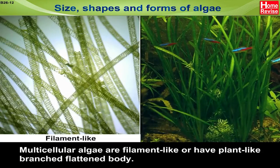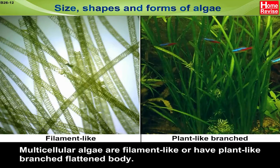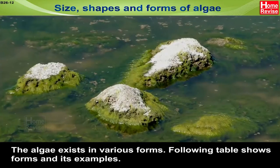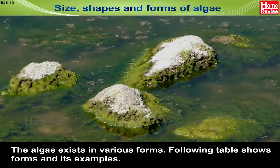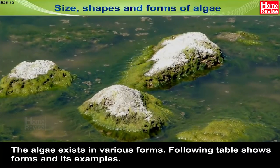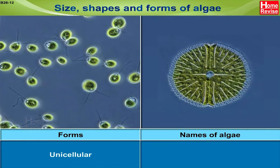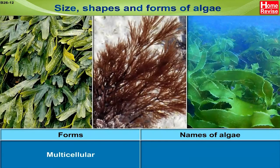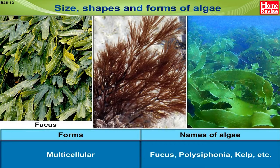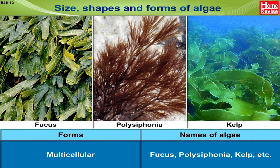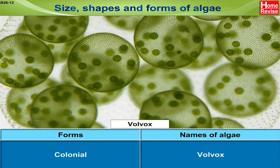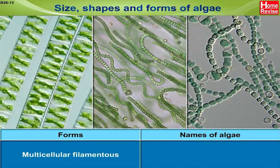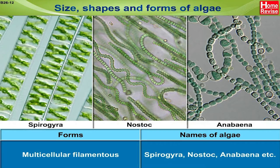Multicellular algae are filament-like or have plant-like branched flattened body. The algae exist in various forms. The following table shows forms and their examples: unicellular algae like Chlamydomonas and diatoms; multicellular algae like Fucus, Polysiphonia, kelp, etc.; colonial algae like Volvox; and multicellular filamentous algae like Spirogyra, Nostoc, Anabaena, etc.